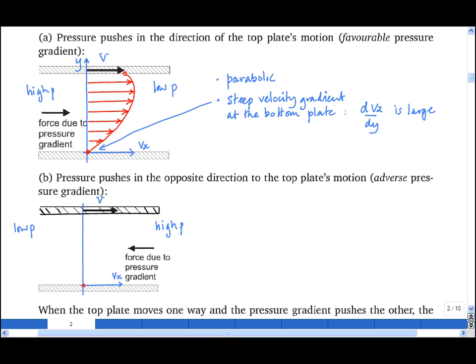We can sketch the velocity profile in a similar manner as before. We know that the velocity at the bottom plate must be 0, and at the top plate must be v. If there were no pressure gradient, we would have a straight line between the two, that is Couette flow. The velocity profile must be parabolic, but this time, because of the direction of the pressure gradient, it must bulge in the opposite direction.